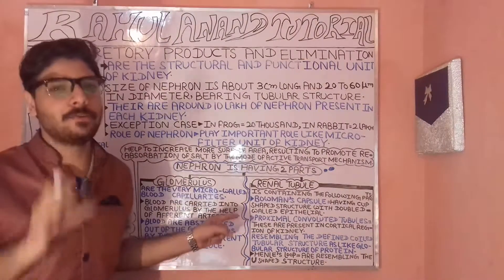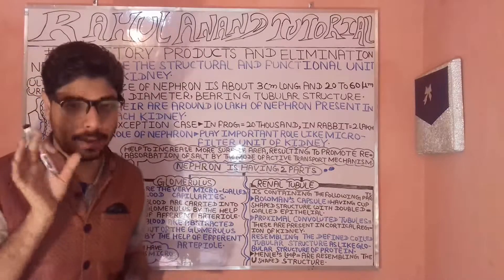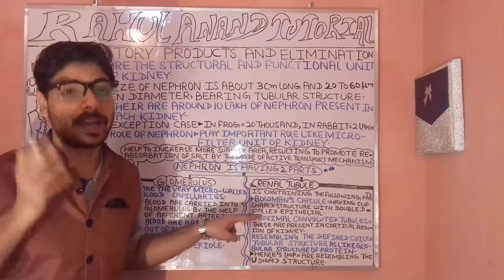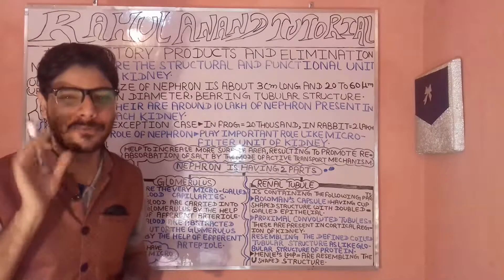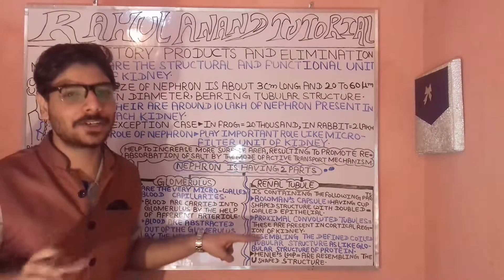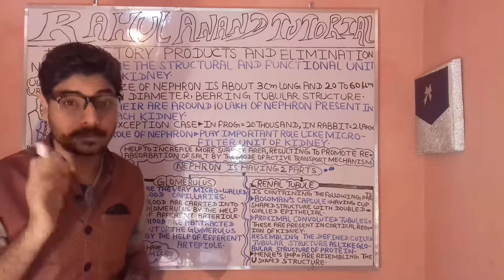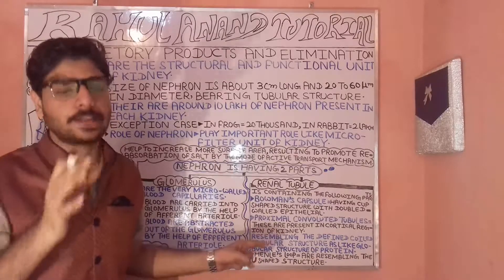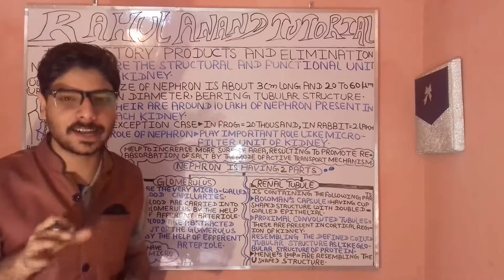The nephron has two different parts: first, the glomerulus, and second, the renal tubules.